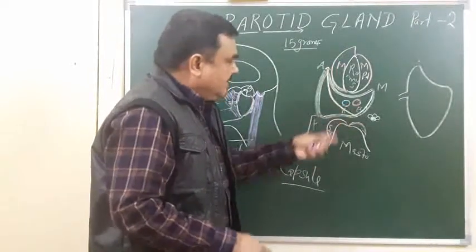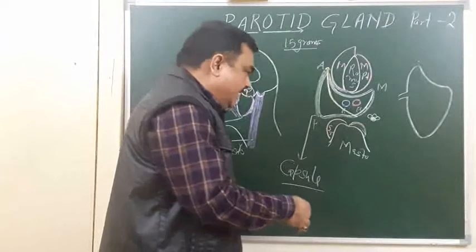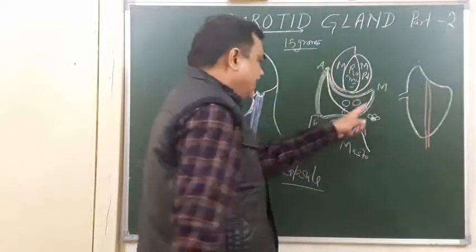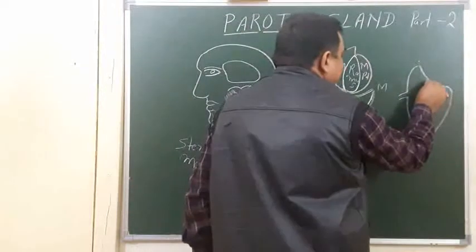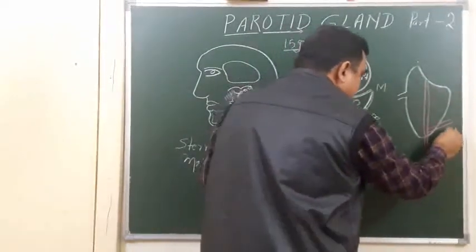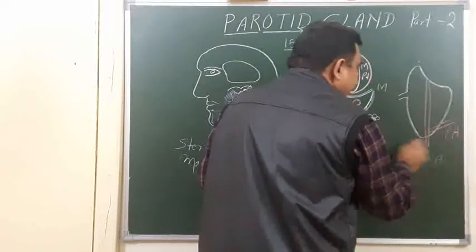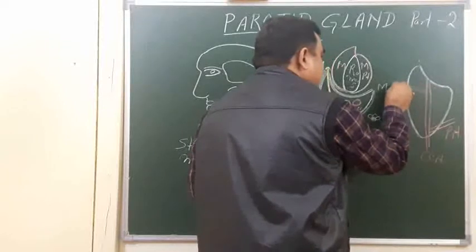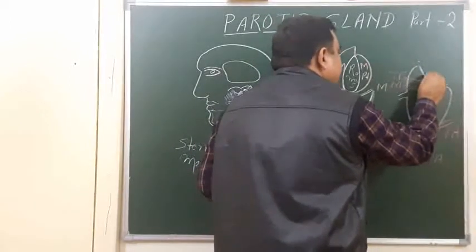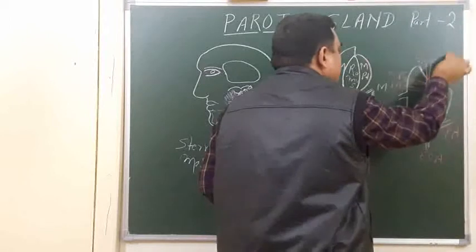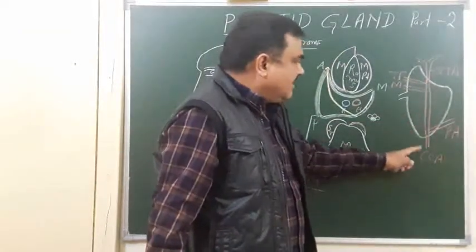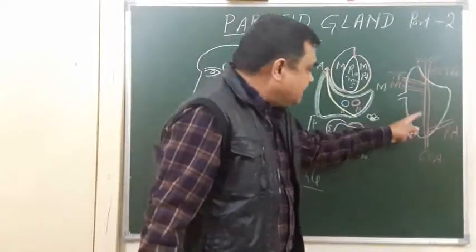The external carotid artery enters through the posteromedial surface. Within the gland it gives several branches: posteriorly it gives the posterior auricular branch, then the maxillary artery, the transverse facial artery, and superiorly the superficial temporal artery. These are the branches of the external carotid artery within the substance of the gland.